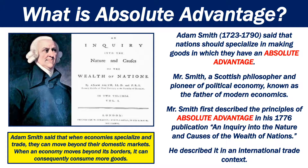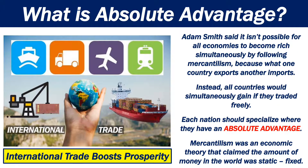Adam Smith said that nations should specialise in making goods in which they have an absolute advantage. Smith, a Scottish philosopher and pioneer of political economy, is known as the father of modern economics. He first described the principles of absolute advantage in his 1776 publication, An Inquiry into the Nature and Causes of the Wealth of Nations, in an international trade context. Smith said it isn't possible for all economies to become rich simultaneously by following mercantilism, because what one country exports, another imports. Instead, all countries would simultaneously gain if they traded freely, with each nation specialising where they have an absolute advantage.